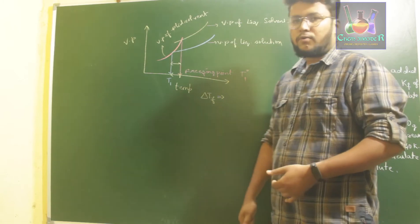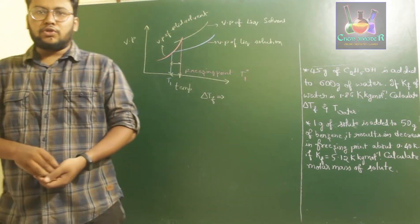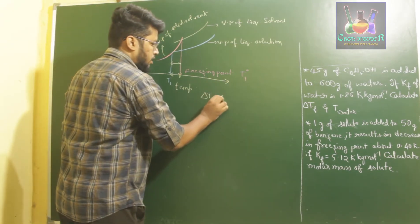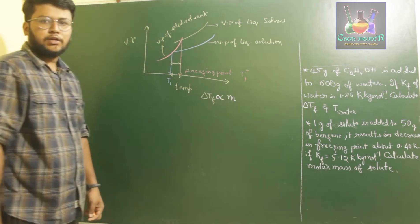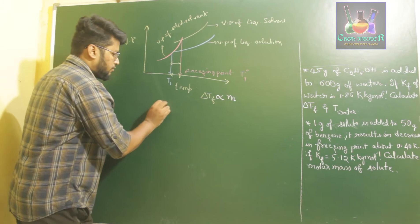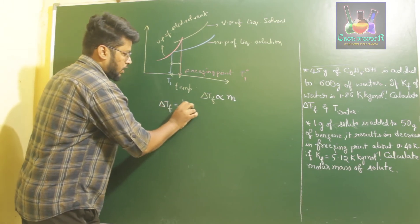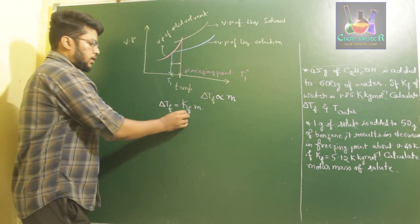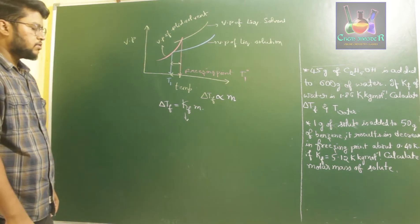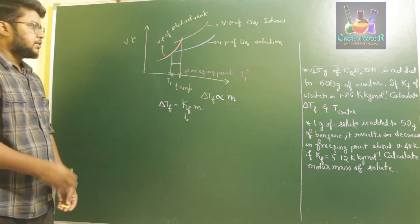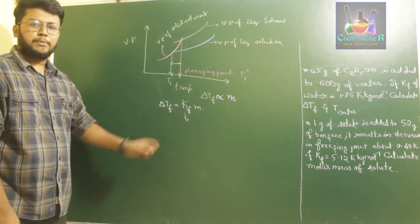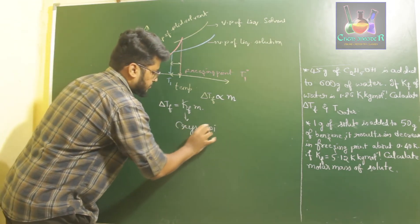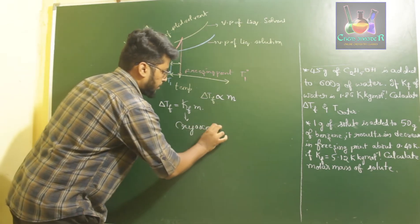Depression in freezing point means the lowering in freezing point of a pure solvent when an amount of solute is added, which depends upon the mole fraction. ΔTf is directly proportional to the amount of solute added — that is, ΔTf is directly proportional to M, the molality of the solute. Therefore, ΔTf = Kf × M, where Kf is called the depression in freezing point constant, also named the cryoscopic constant.